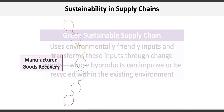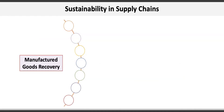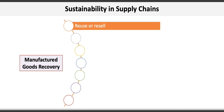Many companies are developing options to recover manufactured goods that may be discarded or otherwise unusable — this is often called manufactured goods recovery, and it consists of seven general activities. Companies might reuse or resell the equipment and its various component parts directly to customers once the original manufactured good is discarded. Furniture, appliances, and clothes are examples.